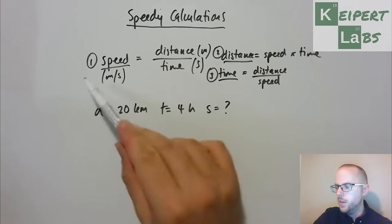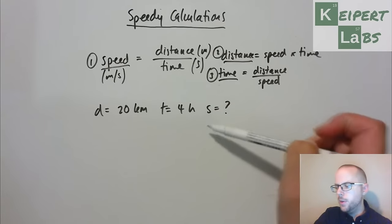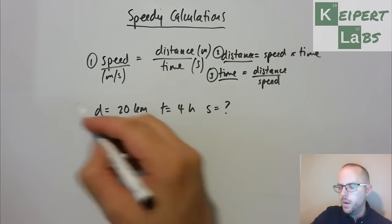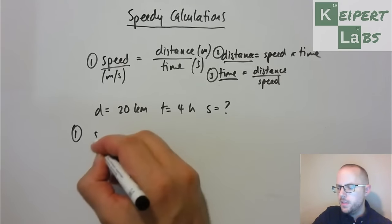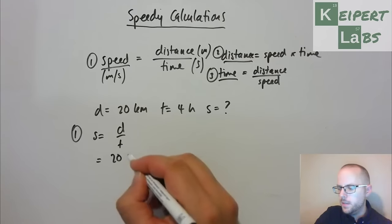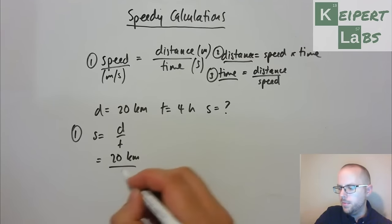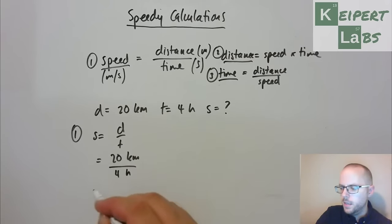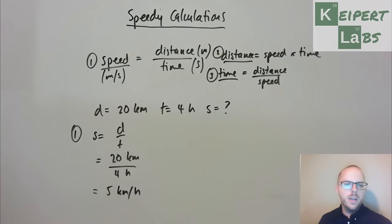So we've got formulas one, two and three. Just like in the previous example, speed is the thing we're trying to find. So version one is what we will use. Speed equals distance over time equals 20 kilometres divided by a time of 4 hours gives us 5 kilometres per hour, which is faster than walking pace. Your average walking pace is 4 kilometres per hour, so there you go. That's just a little interesting fact for you.